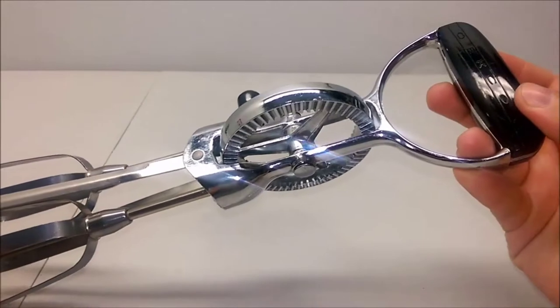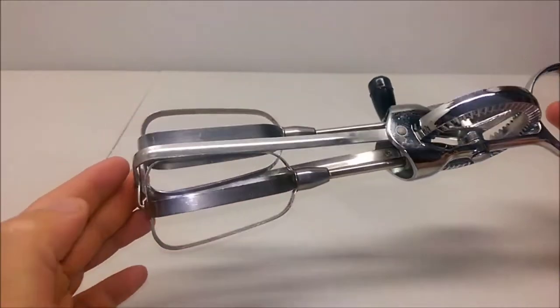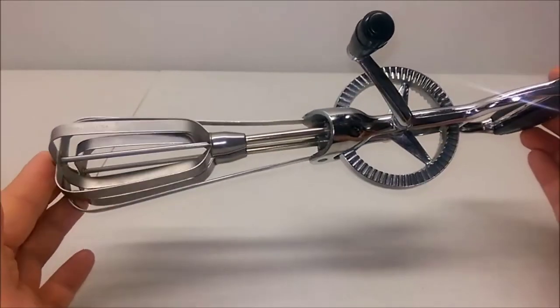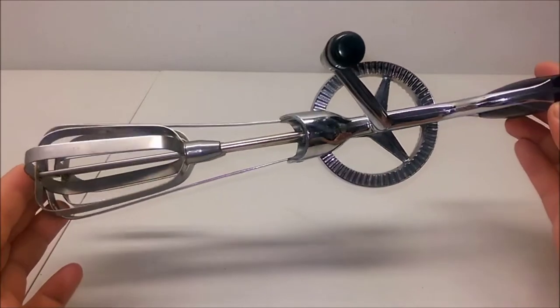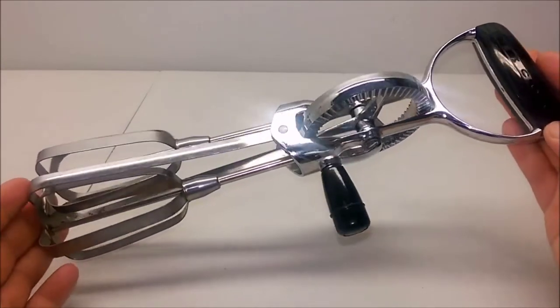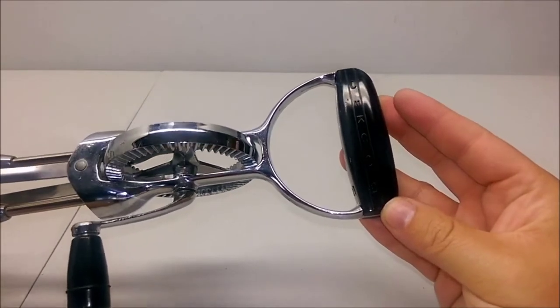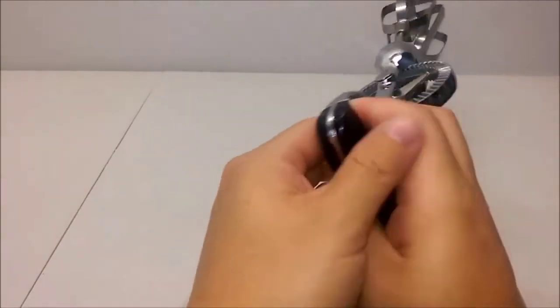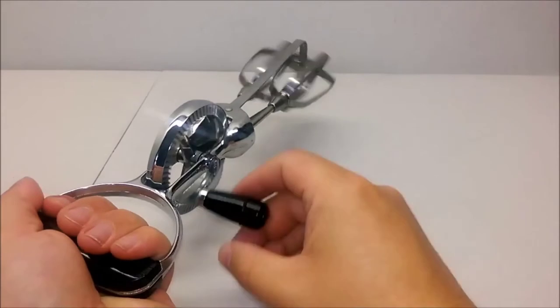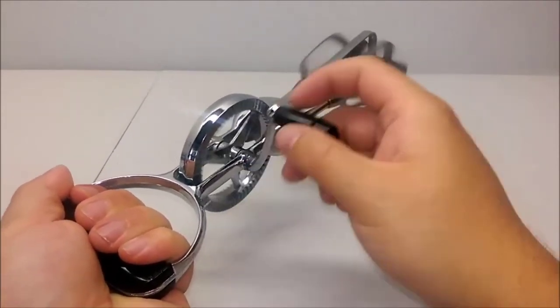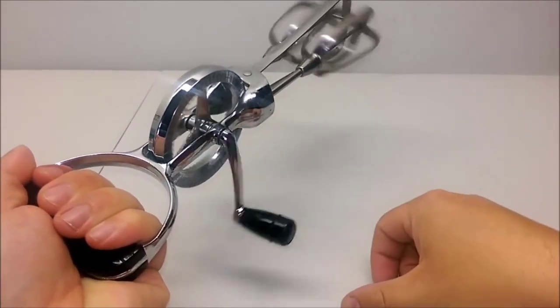This rotary egg beater has a manual operation and can blend foods quickly without creating a messy kitchen. Designed in premium quality stainless steel, the beater also has an attached chrome handle that provides a good grip while working. It features two attached beaters with blades that work smoothly without the batter sticking to it. The blades move when the geared wheel is rotated by hand.